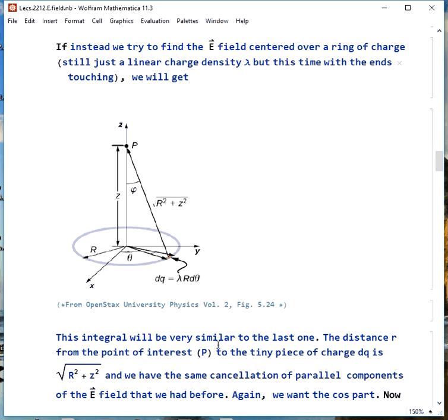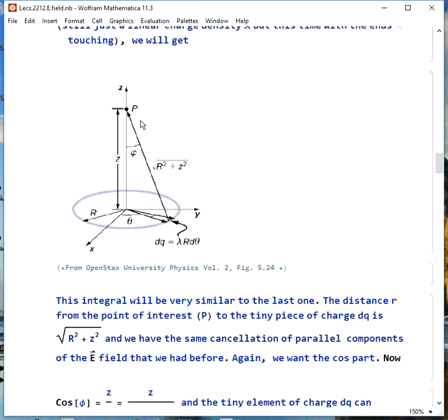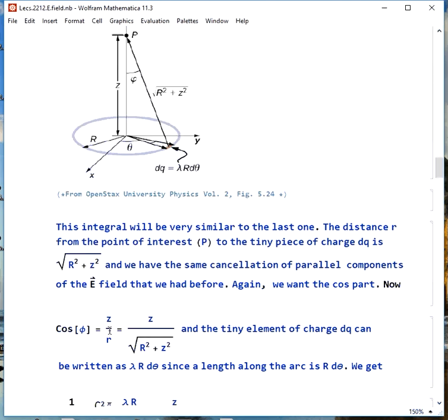This integral is going to look a lot like the last one. Little r is the distance from the point of interest to the tiny piece of charge dq, that is square root of r squared plus z squared away. We have the same cancellation of the parallel components that we had before, so again, we want cosine of what they've got as phi here. So cosine of phi is again z over little r, which is z over square root of big R squared plus z squared. Our tiny element of charge dq can be written as lambda r d theta, since the length along the arc is r d theta.